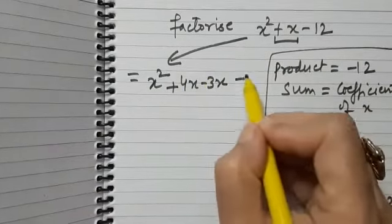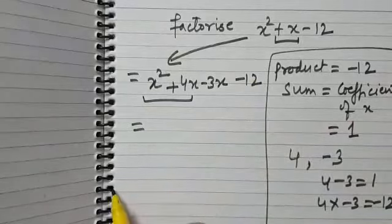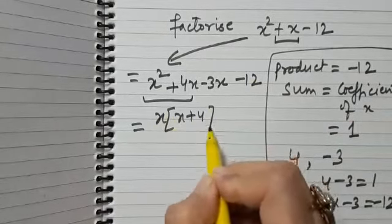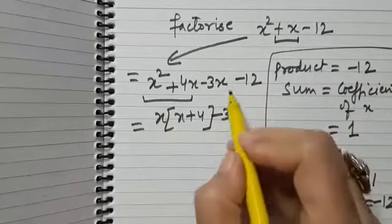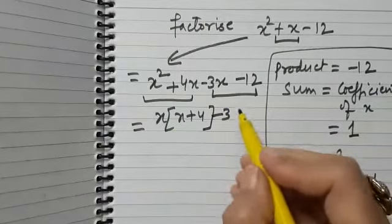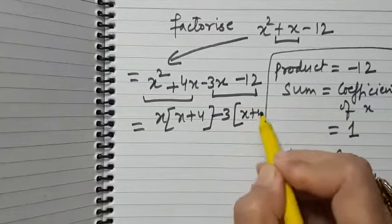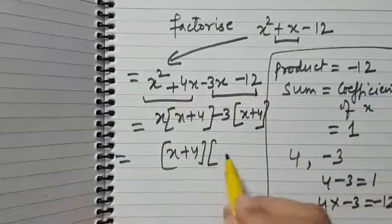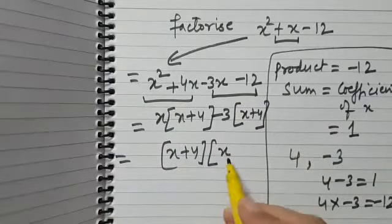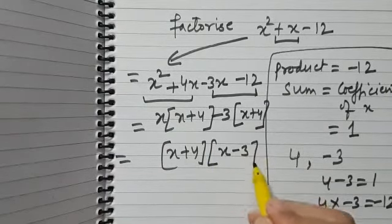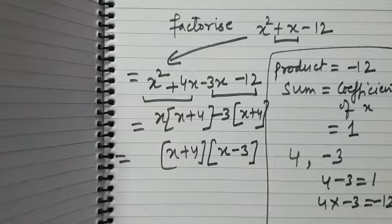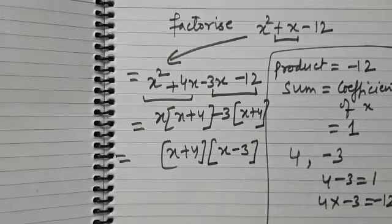So we write x² + x - 12 as x² + 4x - 3x - 12. Take x common from the first two terms to get x(x + 4). Then take minus 3 common from the next two terms to get minus 3(x + 4). Now take x + 4 common from both terms to get the answer: (x + 4)(x - 3).